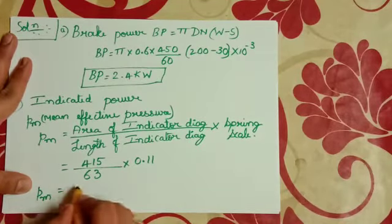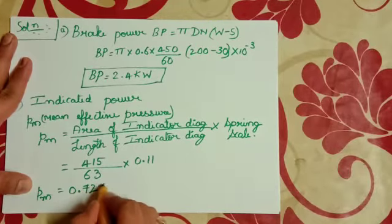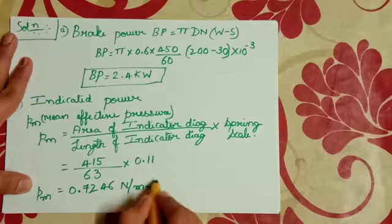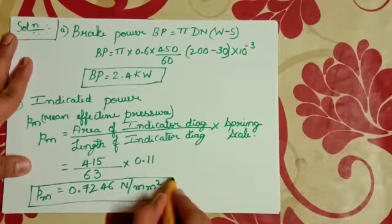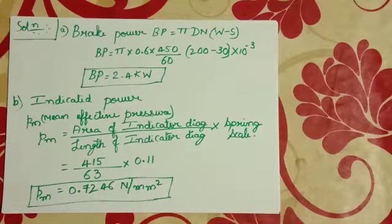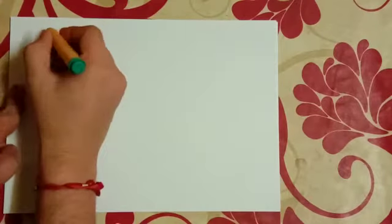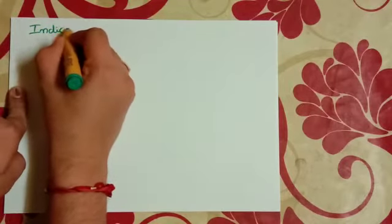Pm is equal to 0.7246 newton per mm square.